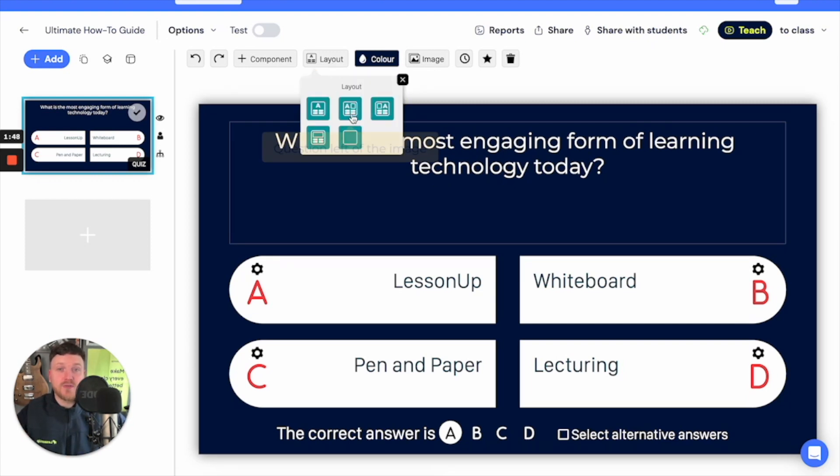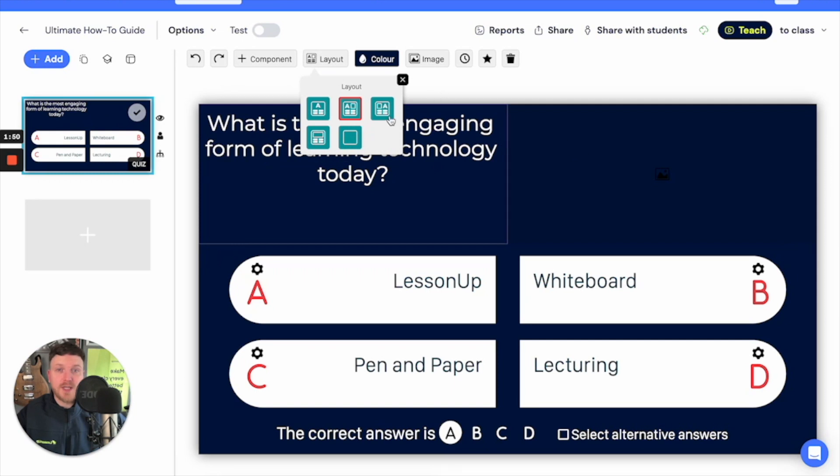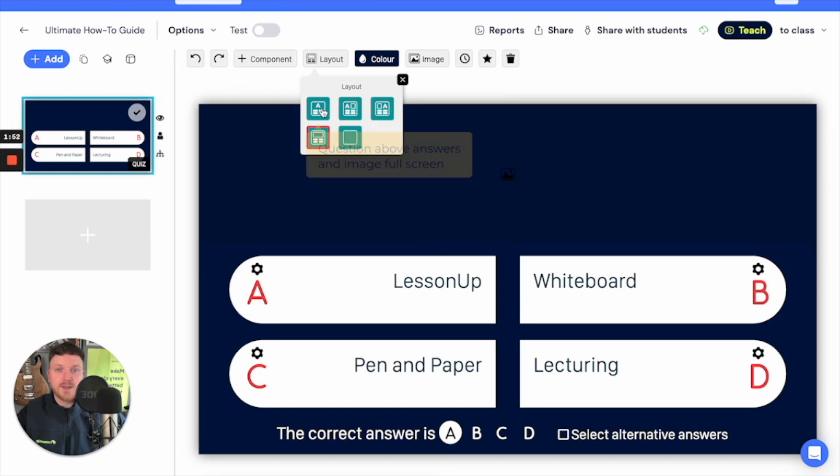I can even change the layout of the question if I want. If I want to include space for a picture on either side. Maybe a picture question or have it completely empty so I can change the formatting however I'd like. To do that I'd select the bottom right hand or bottom center option again.